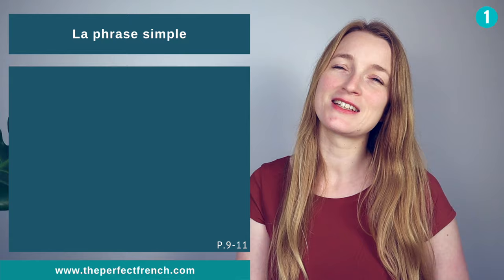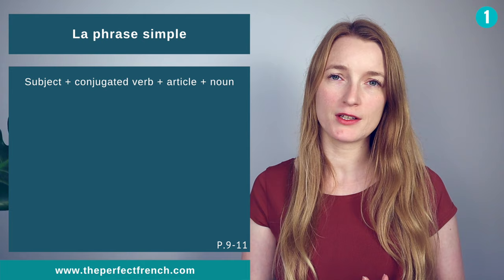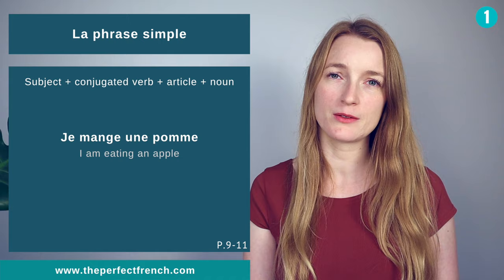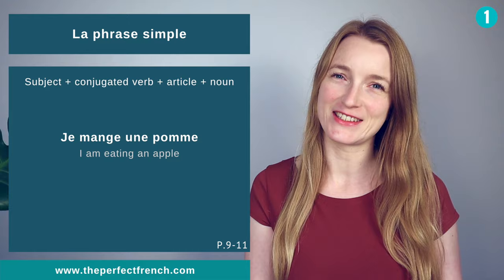Let's start. The first lesson we saw was la phrase simple — the simple sentence — which is made out of a subject, conjugated verb, article, and noun. For example: je mange une pomme. We added slowly more elements and also changed the article, subject, etc.